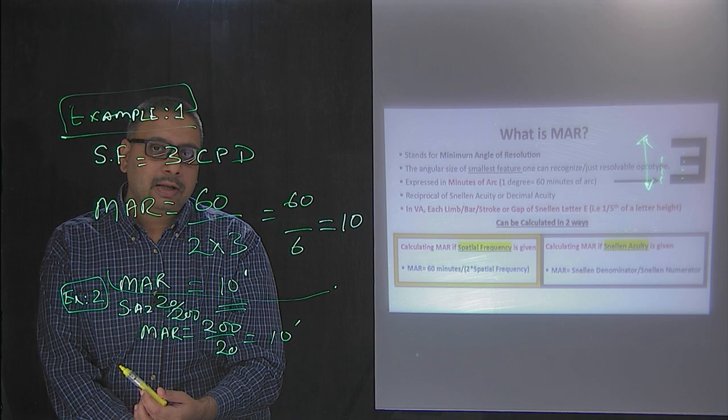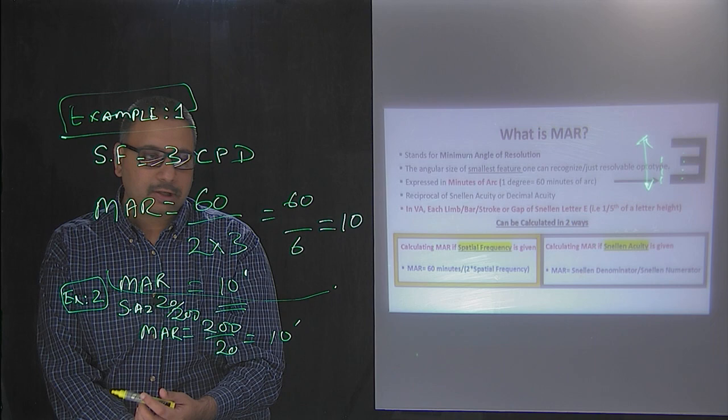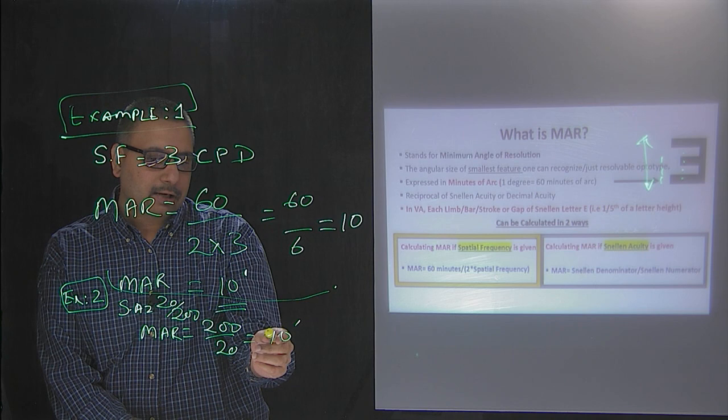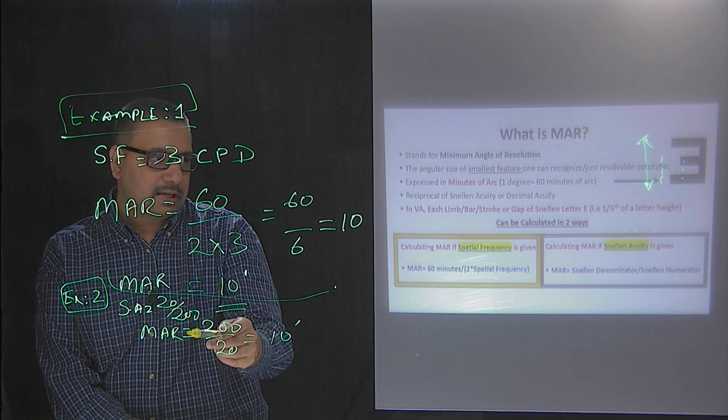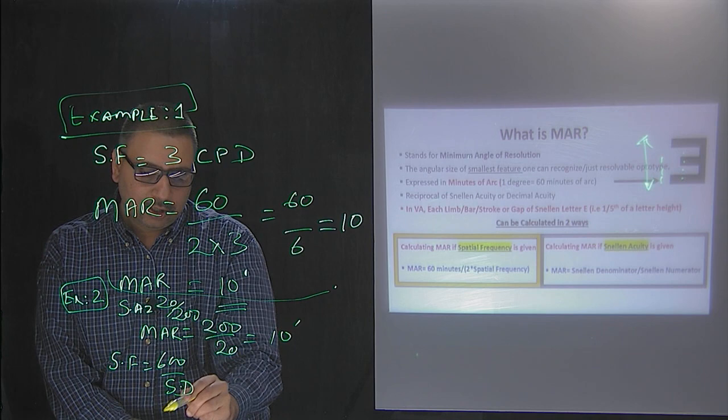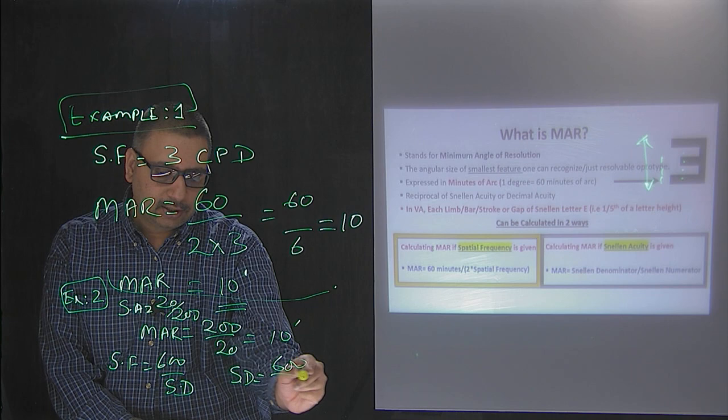Decimal acuity is essentially Snellen numerator divided by Snellen denominator. We also know the relationship between spatial frequency and Snellen acuity using the rule of 600. To calculate spatial frequency, it's 600 divided by Snellen denominator. To calculate Snellen denominator, it's 600 divided by spatial frequency. So you can go from one direction to the other.